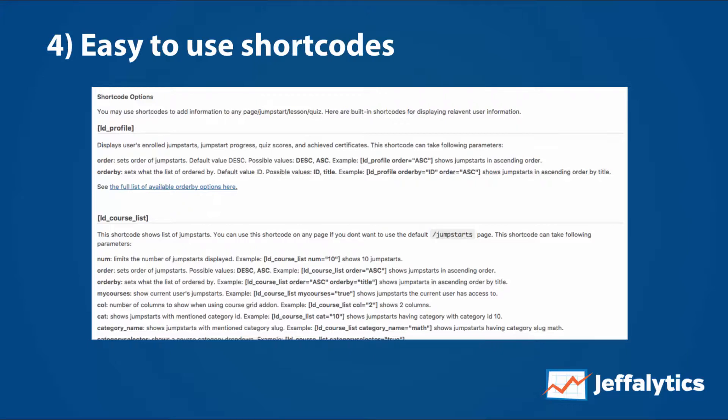Number four: there are easy-to-use shortcodes. Within WordPress, we can basically put something like an LD profile shortcode on a page and it shows somebody's entire learning profile. We really like the ability to put in shortcodes that show different content whether someone is a student or a visitor. There are all kinds of different shortcodes you can place using LearnDash to display content to the right people at the right time, because as you get further along in the online course journey, you have different levels of access and different reasons why people might go to your site.